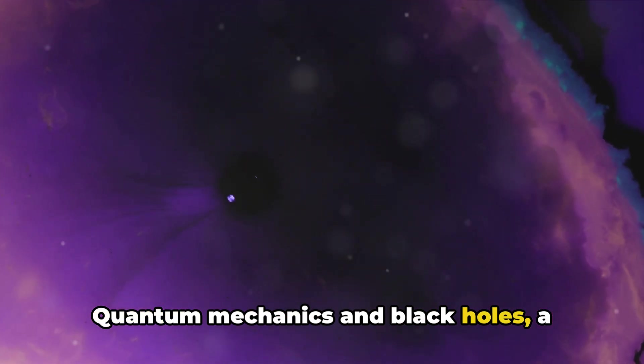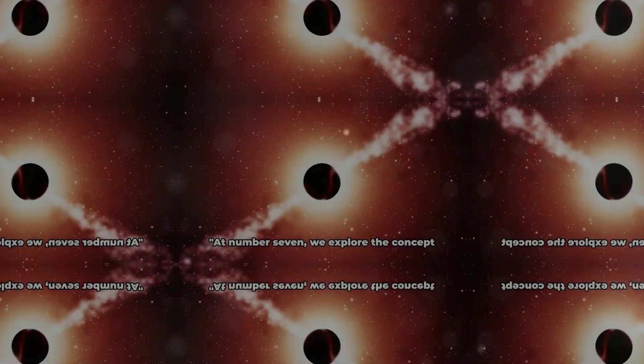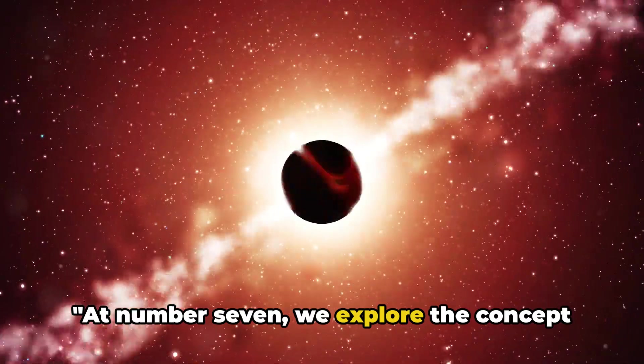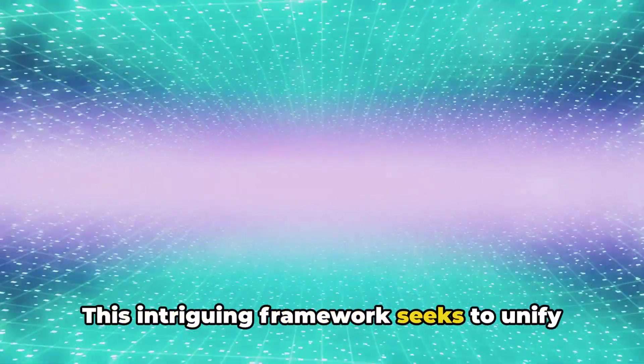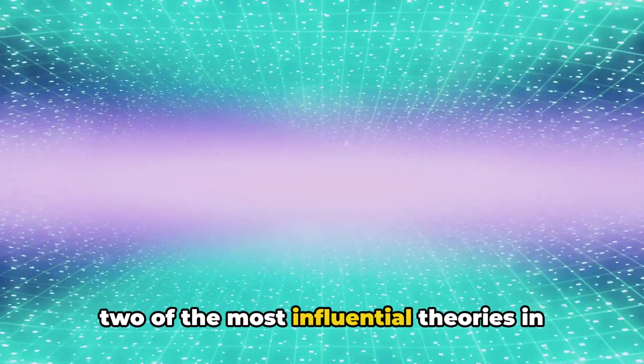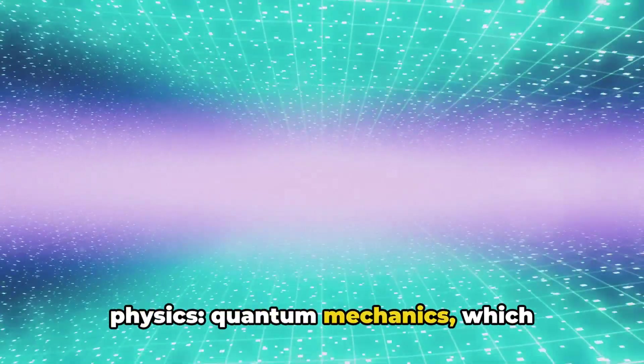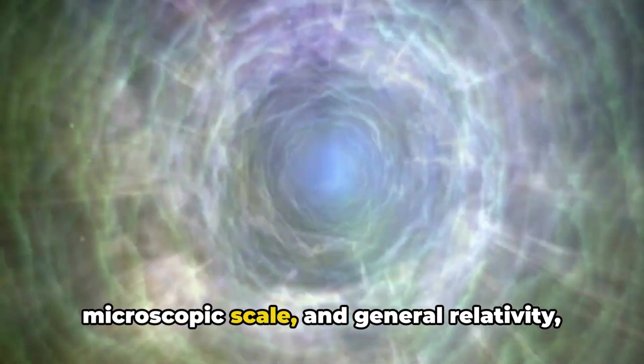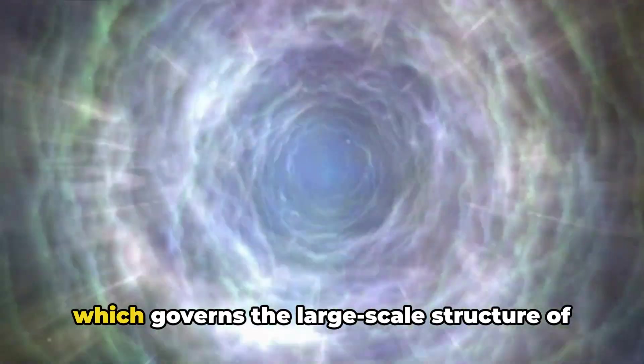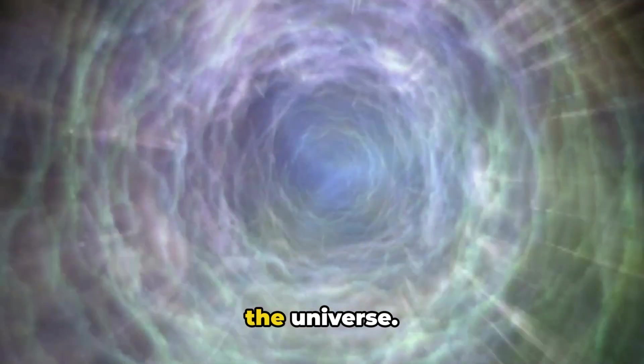At number seven, we explore the concept of quantum loop gravity. This intriguing framework seeks to unify two of the most influential theories in physics: quantum mechanics, which describes the behavior of particles on a microscopic scale, and general relativity, which governs the large-scale structure of the universe.